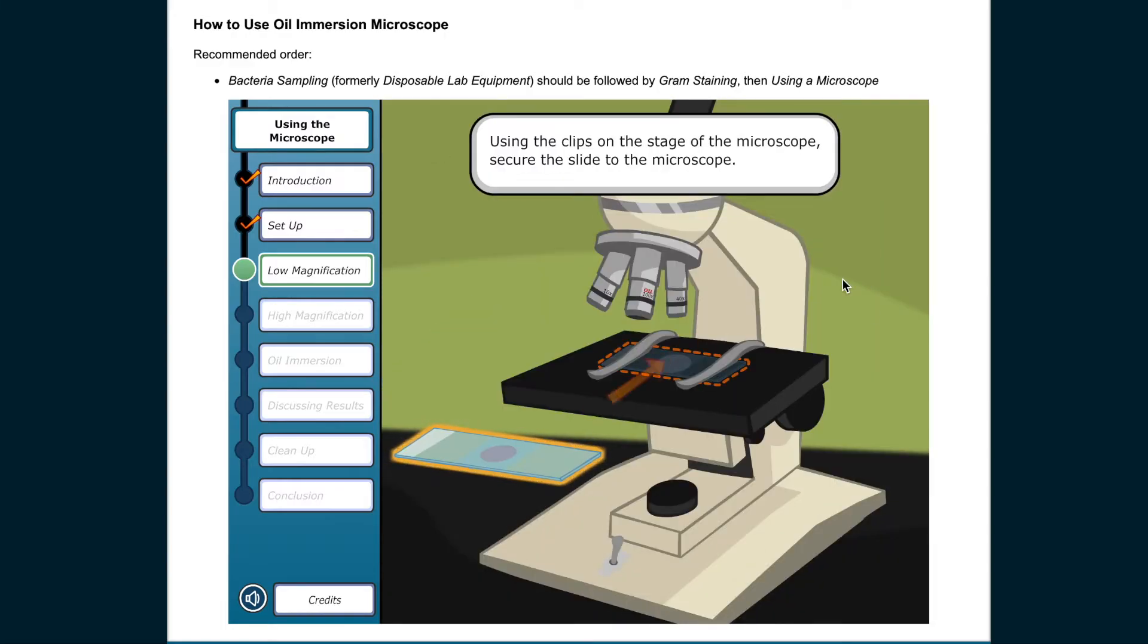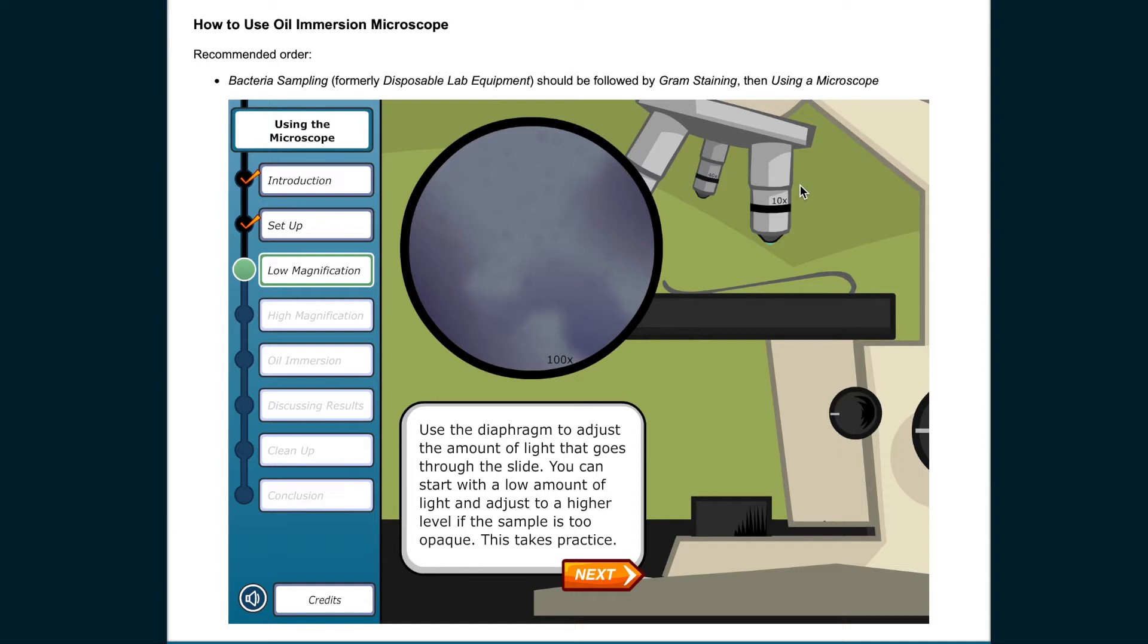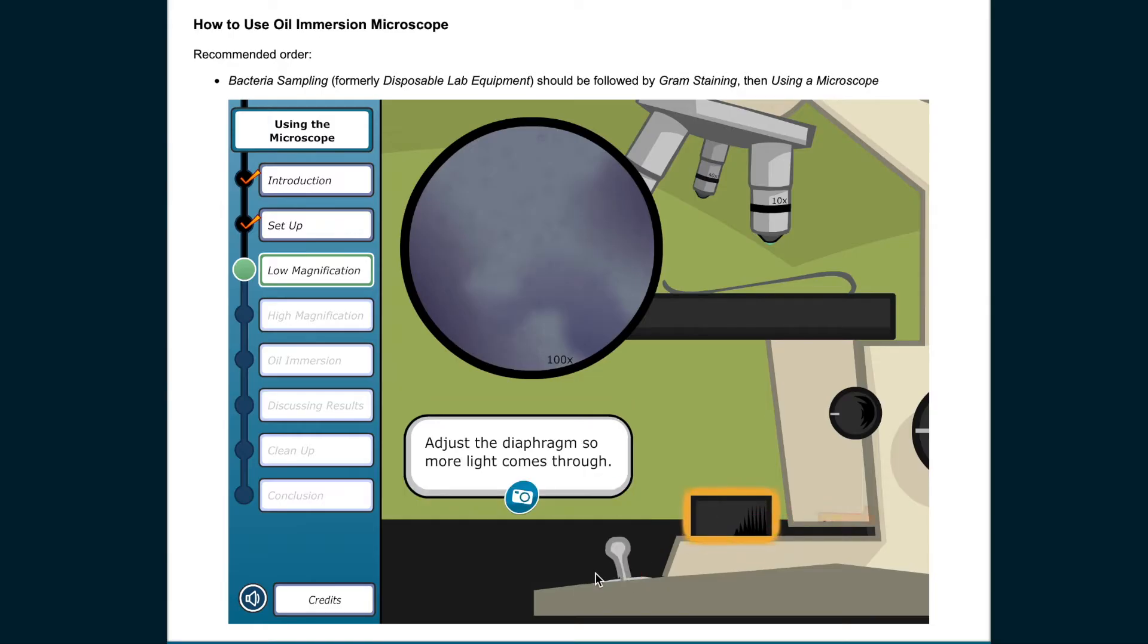Using the clips on the stage of the microscope, secure the slide to the microscope. Use the diaphragm to adjust the amount of light that goes through the slide. You can start with a low amount of light and adjust to a higher level if the sample is too opaque. This takes practice. Adjust the diaphragm so more light comes through.